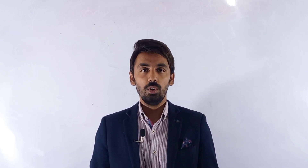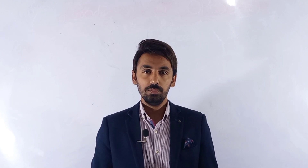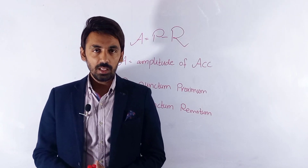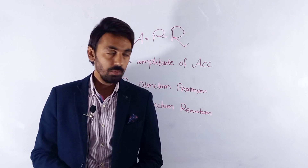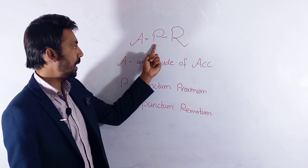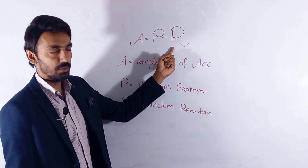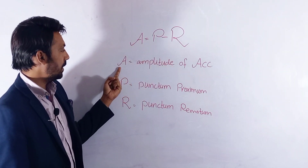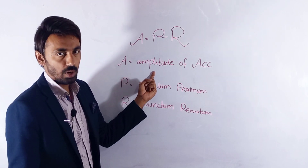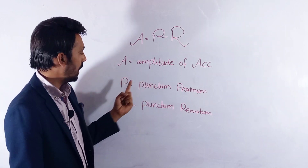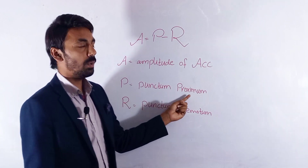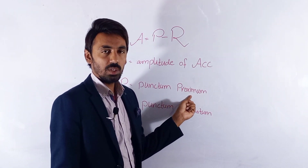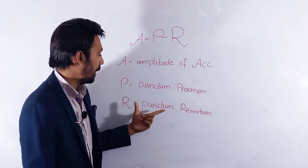For calculating the amplitude of accommodation, we have the formula: A equals P minus R, where A is the amplitude of accommodation, P is the punctum proximum (the near point), and R is the punctum remotum.